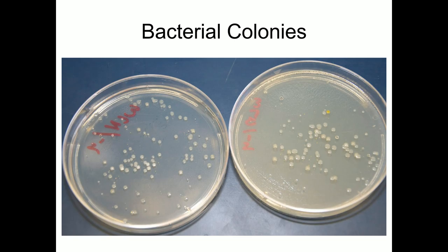Each colony resulted from a single bacterium that survived on the plate and reproduced. As a result, a colony contains genetically identical clones of the original bacterium. For our gene cloning lab, this is exactly what we'll be looking for. If we spread bacteria over the entire plate and only a few colonies appear, it means most bacteria never survived — only those with a special trait did. In our bacterial transformation lab, that trait is the plasmid introduced to the bacteria, which provides resistance to the antibiotic in the plate.